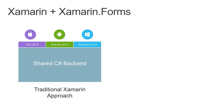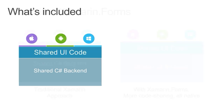The traditional Xamarin approach has you build your UI using platform-specific APIs — on iOS you might use a UIViewController, on Android an Activity. You share everything that's not platform-specific: view models, models, database and web services logic, and business logic. Xamarin Forms takes this to the next level by allowing you to share your UI code as well, while still building a native application.